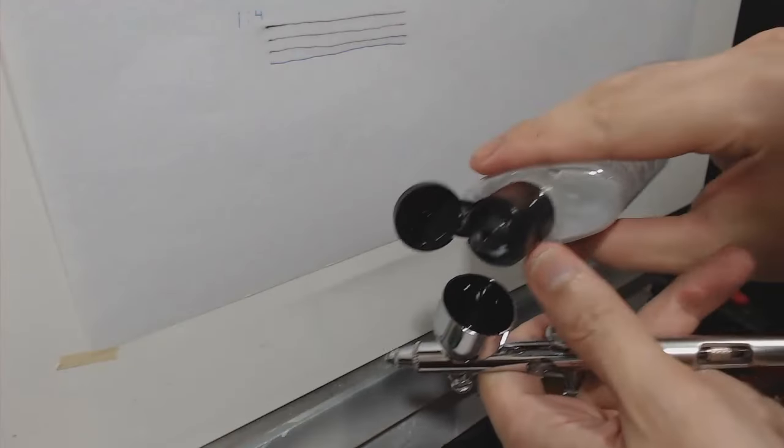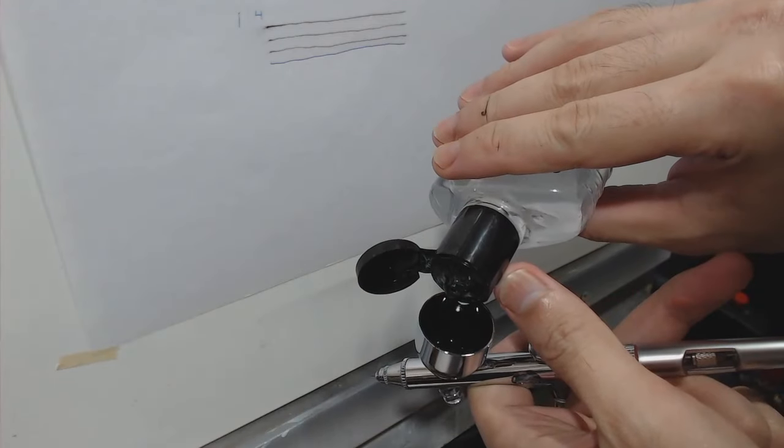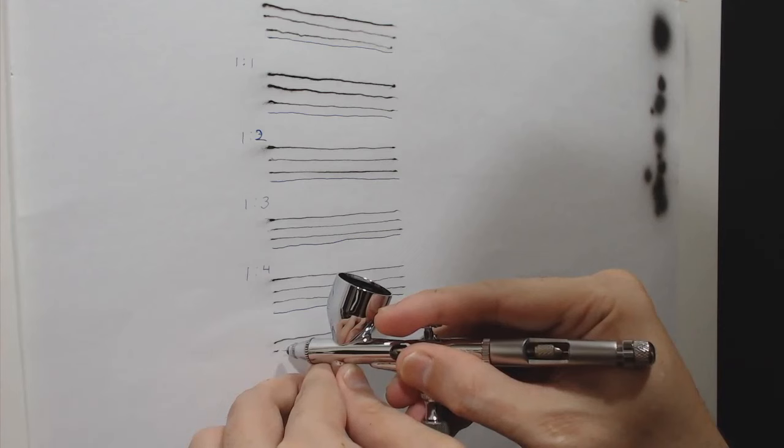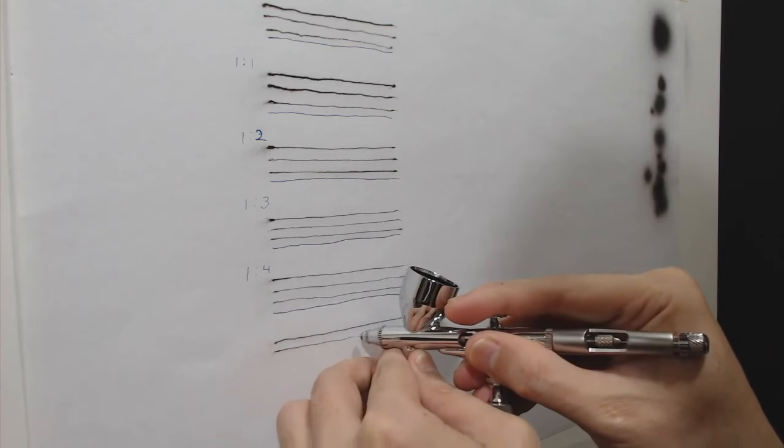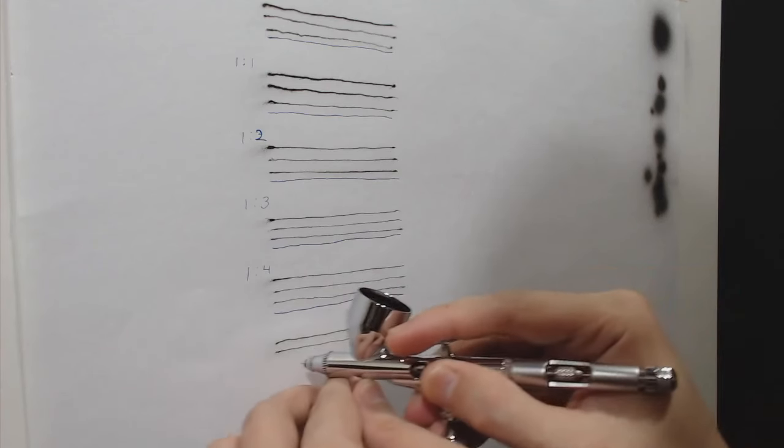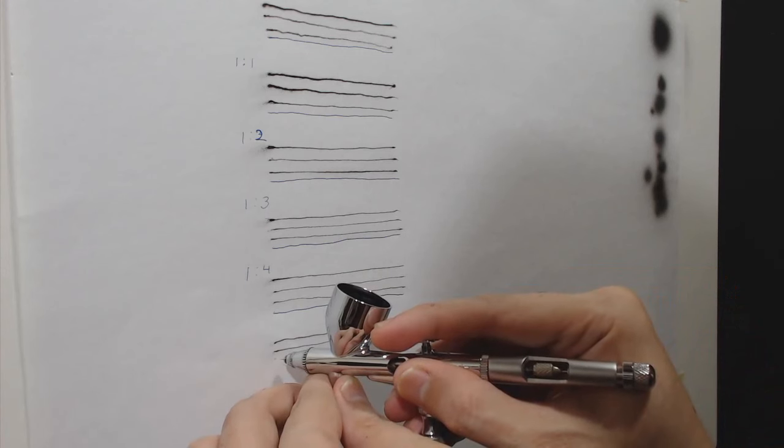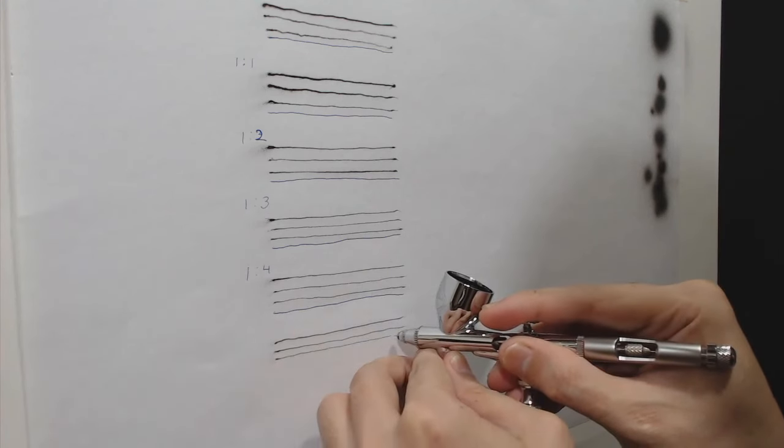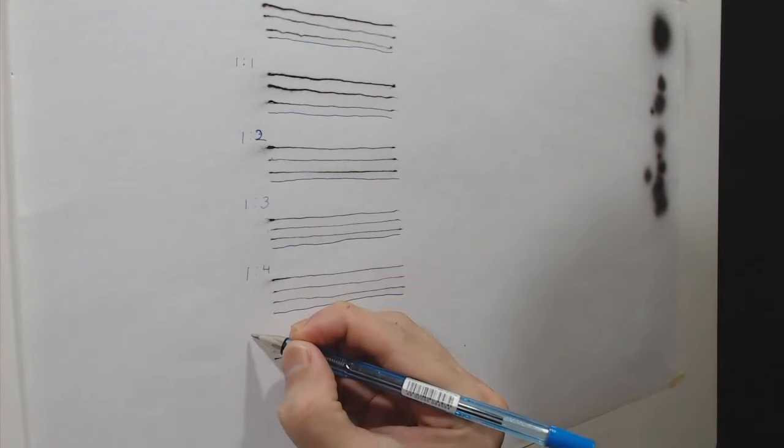So how about we add more water. This time let's jump to one-to-six ratio. I can feel the trigger has become sensitive. The paint just comes out easily. I'm not saying that it is easier to control, but for me it got more predictable. And this is the way that I like it.